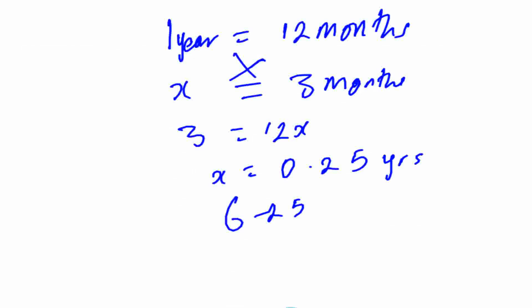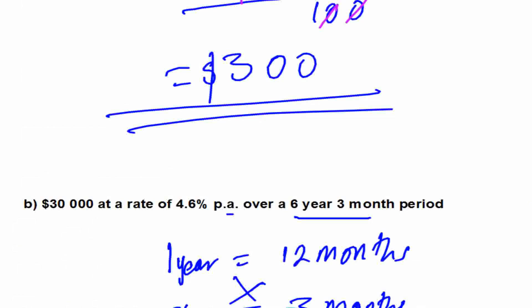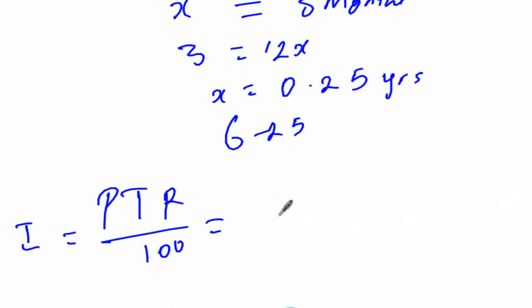Our formula is I = PTR/100, being the interest you are looking for. So our P is the 30,000, times the period—that is the time—which is 6.25, then times the rate, and the rate was given to us as 4.6 over 100.